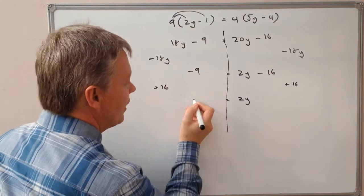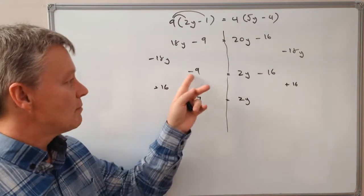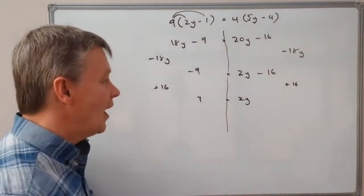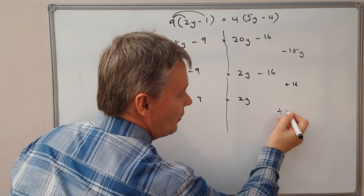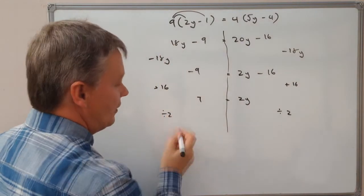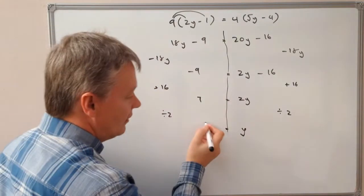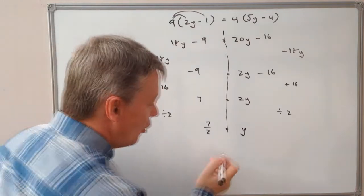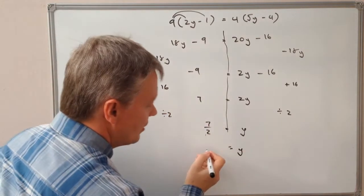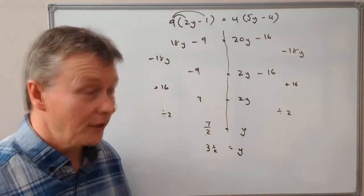On this side, I'm going to get a value of 7, of positive 7, because minus 9 plus 16 is 7. So I've got the value of 2 lots of y, so I'm going to divide both sides by 2. If I do that, I get y on its own and 7 divided by 2, I can either leave as an improper fraction or work it out so that y is the same as 3 and a half or 3.5 if you prefer.